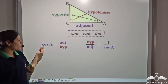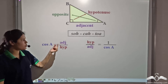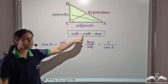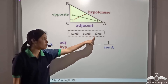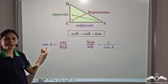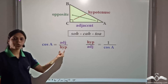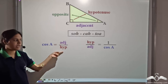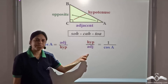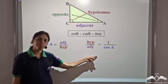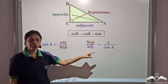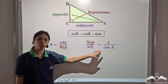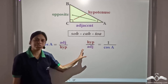Similarly, cos A is equal to adjacent by hypotenuse. From CAH, we have cosine equal to adjacent by hypotenuse. So, cos of A is adjacent by hypotenuse. If we interchange the numerator and denominator, we get hypotenuse by adjacent, which is equal to one by cos A. So, for a fixed angle A, since cos A is constant, even one by cos A will be constant.